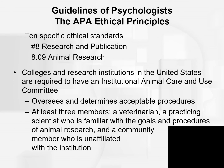If you go to the APA website — the American Psychological Association — you can find their page of ethical principles. There are 10 specific ethical standards; for example, standard 8 on research and publication gives many ethical guidelines for doing and publishing research in psychology. Section 8.09 discusses the ethics of animal research. Colleges and research institutions in the United States are required to have an IACUC — an Institutional Animal Care and Use Committee — which oversees and determines acceptable procedures.